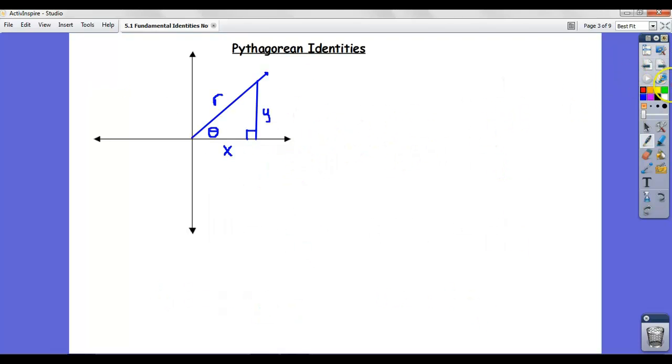There's some new identities we're going to look at here. So these are called the Pythagorean identities. Here's our classic picture of our angle in standard position. And we know that, for instance, the sine of the angle in the picture is y over r. And we know that cosine of the angle equals x over r. Which means that if we multiply both sides by r, I can say that r times the sine of theta is equal to y. And likewise, I can multiply both sides by r here. And I can say that r times the cosine of theta is equal to x.